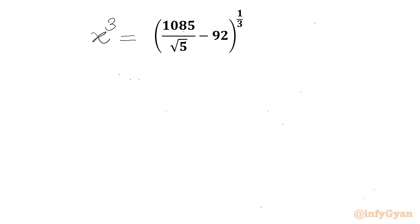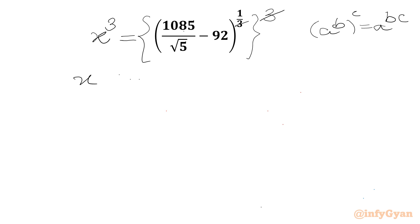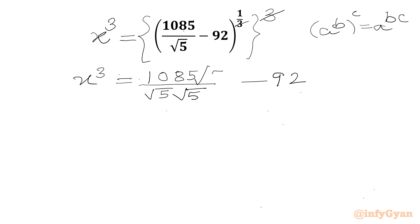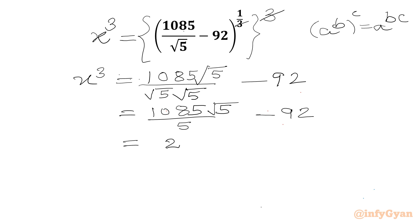Now I will consider cubing both sides. Since a power b whole power c allows us to take the product of the powers, this 3 and 1/3 will cancel. So I can write x cubed equal to 1085 over square root 5 minus 92. Let us rationalize the denominator by multiplying numerator and denominator by root 5. This gives us 1085 root 5 over 5 minus 92, which equals 217 root 5 minus 92. This is x cubed.